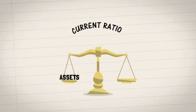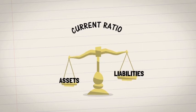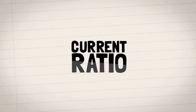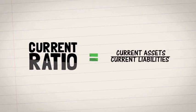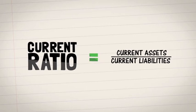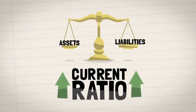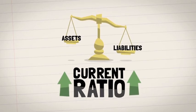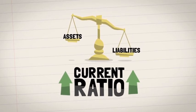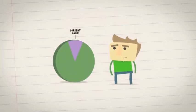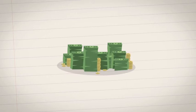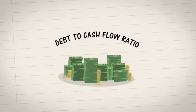The fourth essential ratio is the current ratio. This measures a company's current assets against its current liabilities. To calculate the current ratio, simply divide the current assets by the current liabilities. The higher the ratio, the more likely the company will be able to cover short-term liabilities. A good current ratio is anything above one.